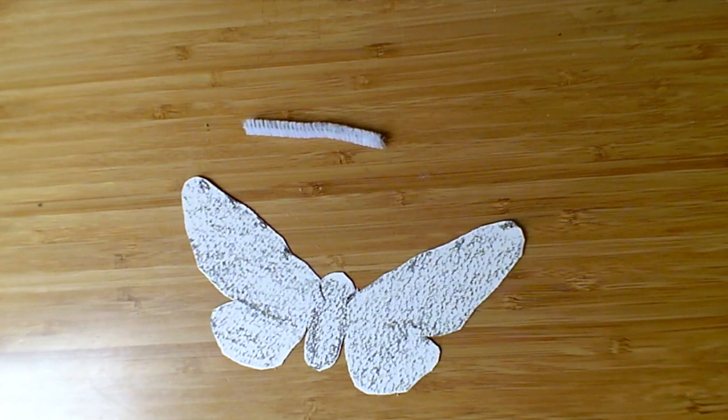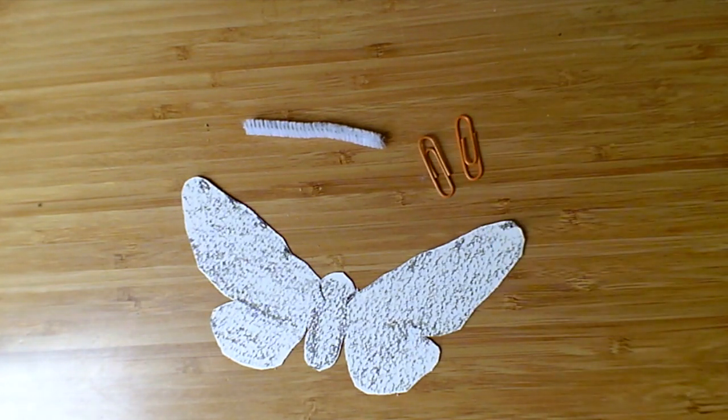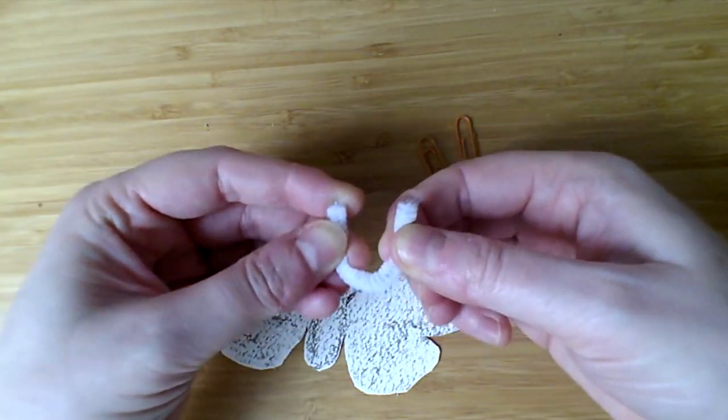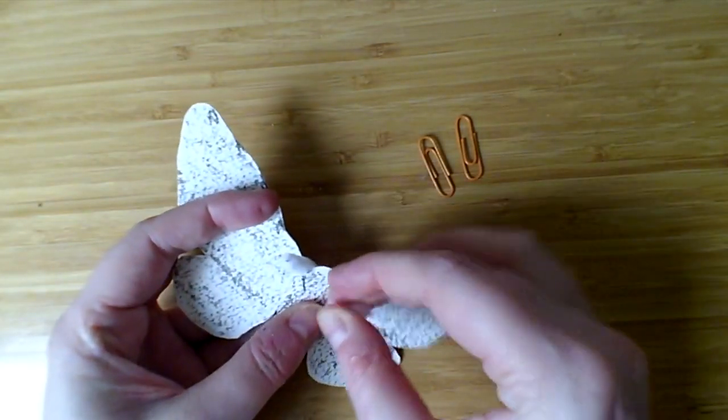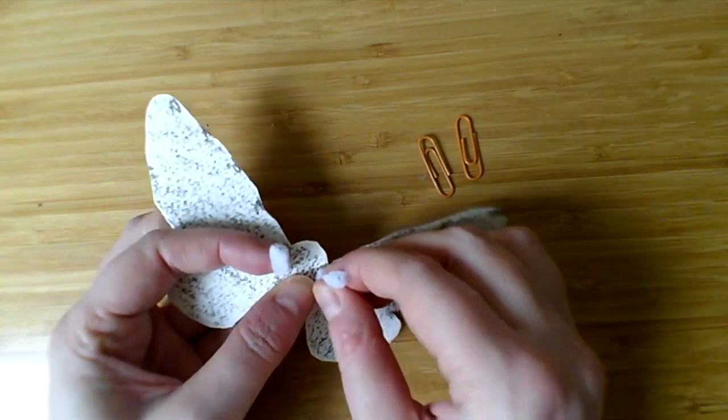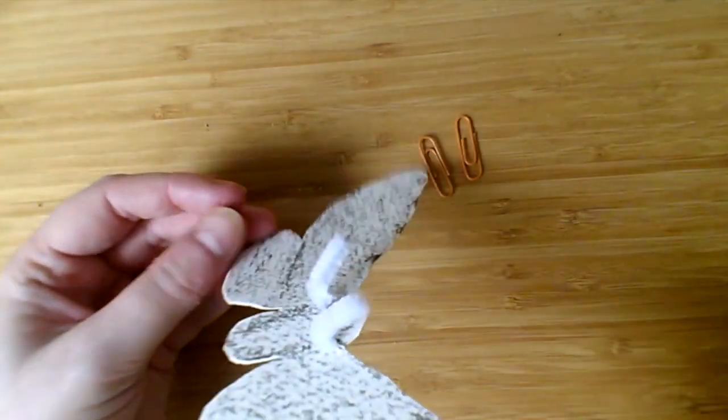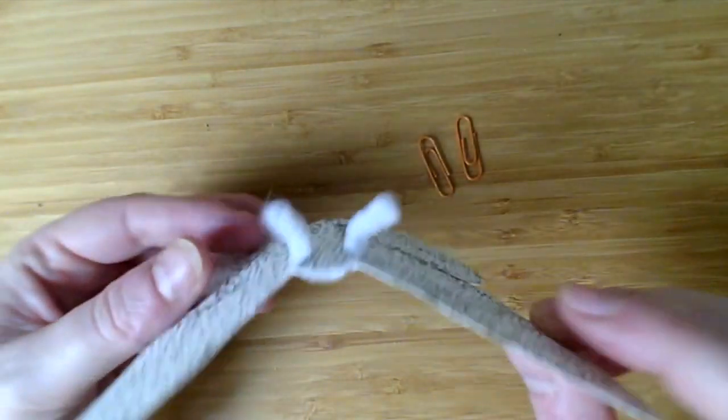Now, take your very short piece of pipe cleaner and your two paper clips and bend your pipe cleaner into a sort of U shape or a V shape. Pick up the moth and put half of the V shape into each of the slots you made. And then you can squeeze them together and bend them over to make some beautiful feathered antennae like the ones we looked at earlier.